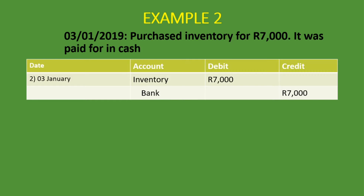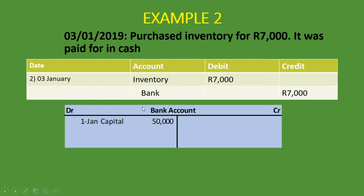I want to bring back the bank account we did previously, where the owner invested 50,000 rand. Now I want to show you how you list all the transactions for a specific account. We purchased inventory for 7,000 rand, so money went out of the bank — it decreased. Bank was credited by 7,000 rand, so we put it on the credit side with the date 3rd of January. The description is the contra account — inventory. General ledger is not complicated at all if you understand your accounts and your debits and credits.